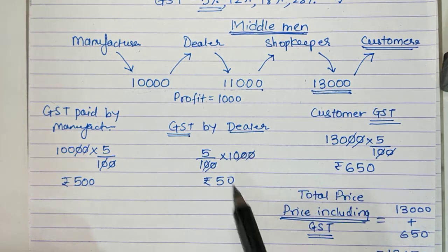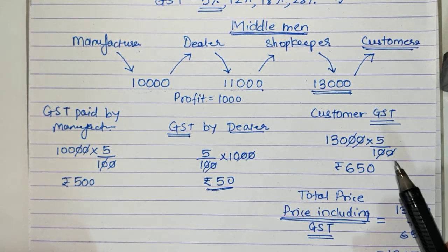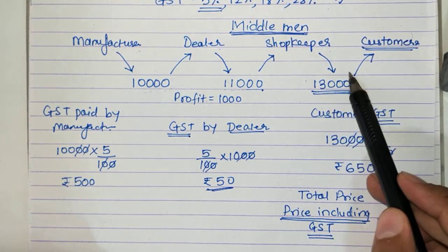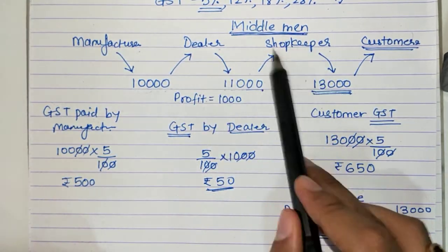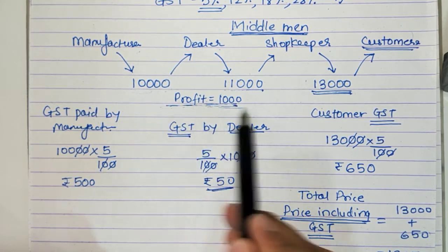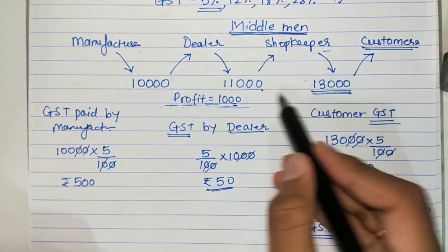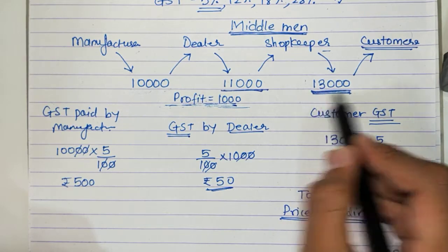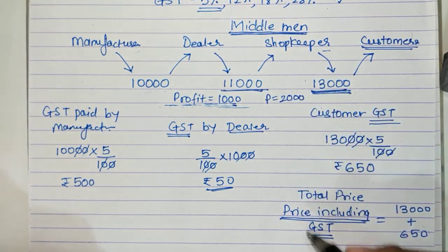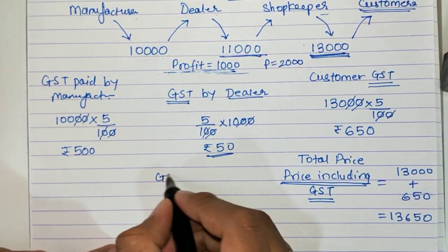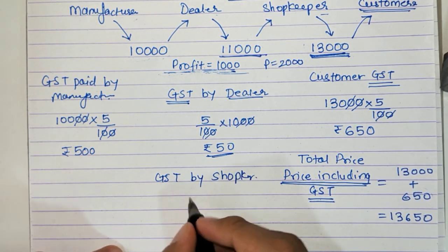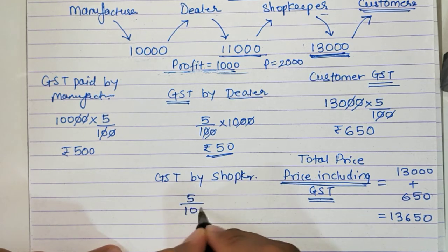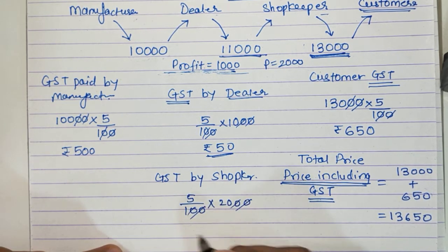The GST paid by the dealer is Rs. 50. Customer and manufacturer pay GST on the full price, but dealer and shopkeeper pay GST only on their profit. For the shopkeeper: bought at 11,000, sold at 13,000, profit is Rs. 2,000. GST at 5% of 2,000 = Rs. 100. This GST goes to the government.